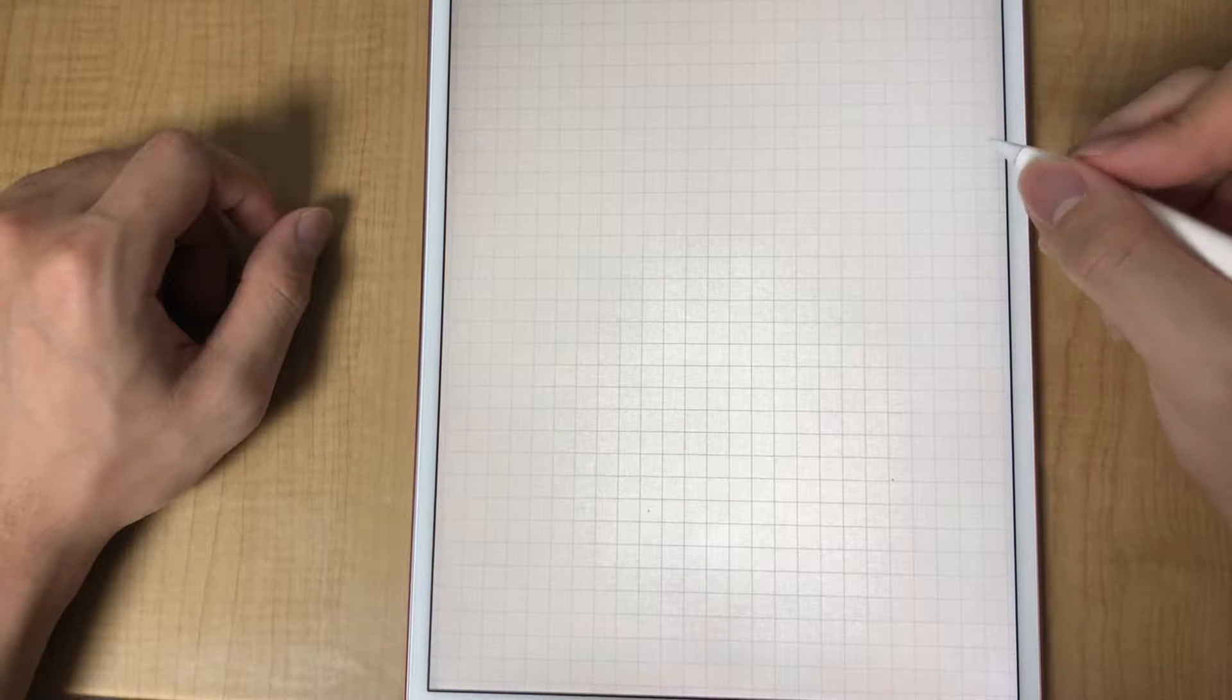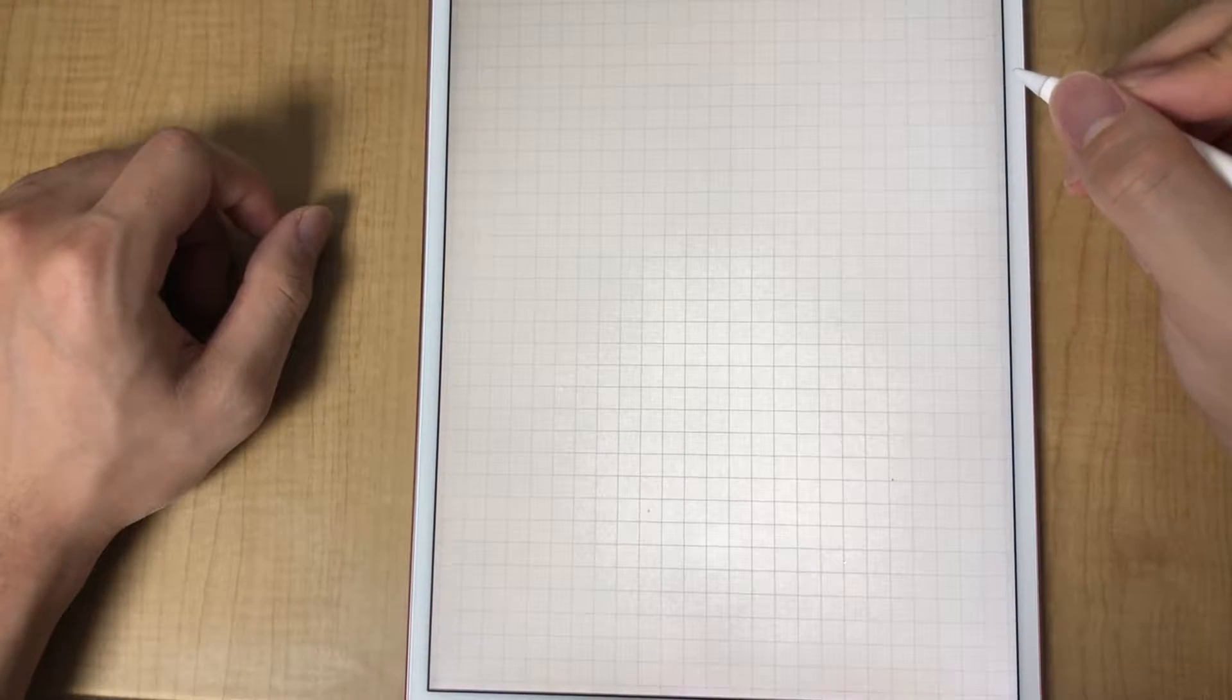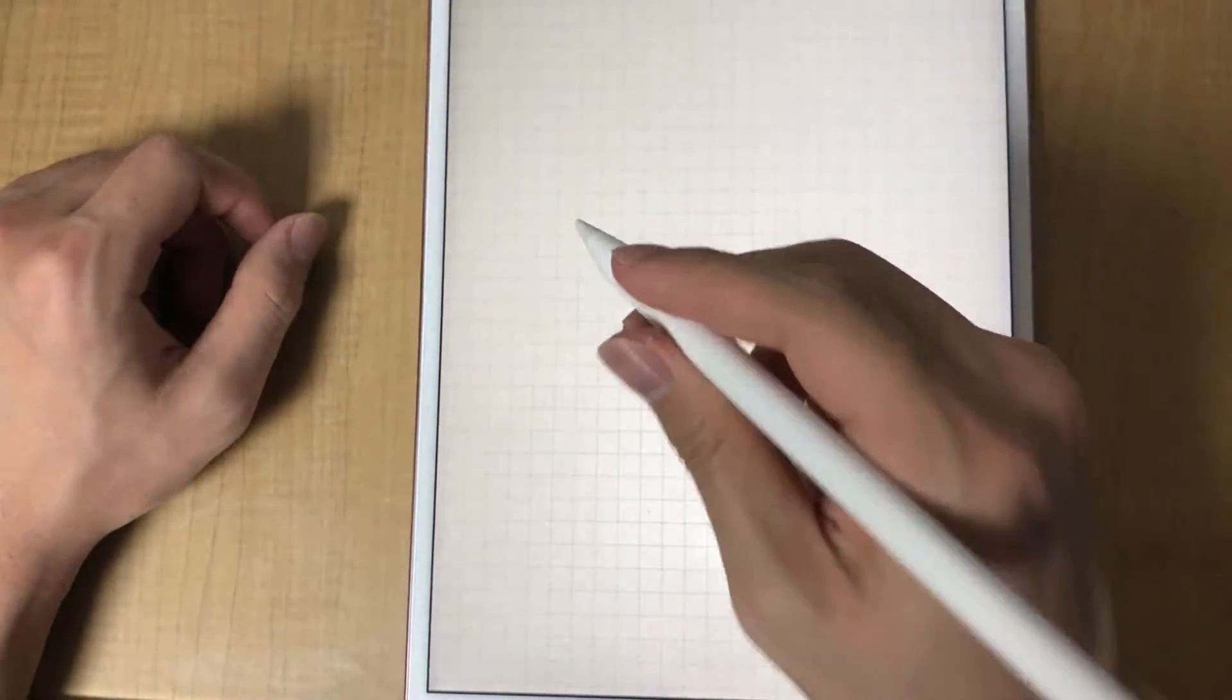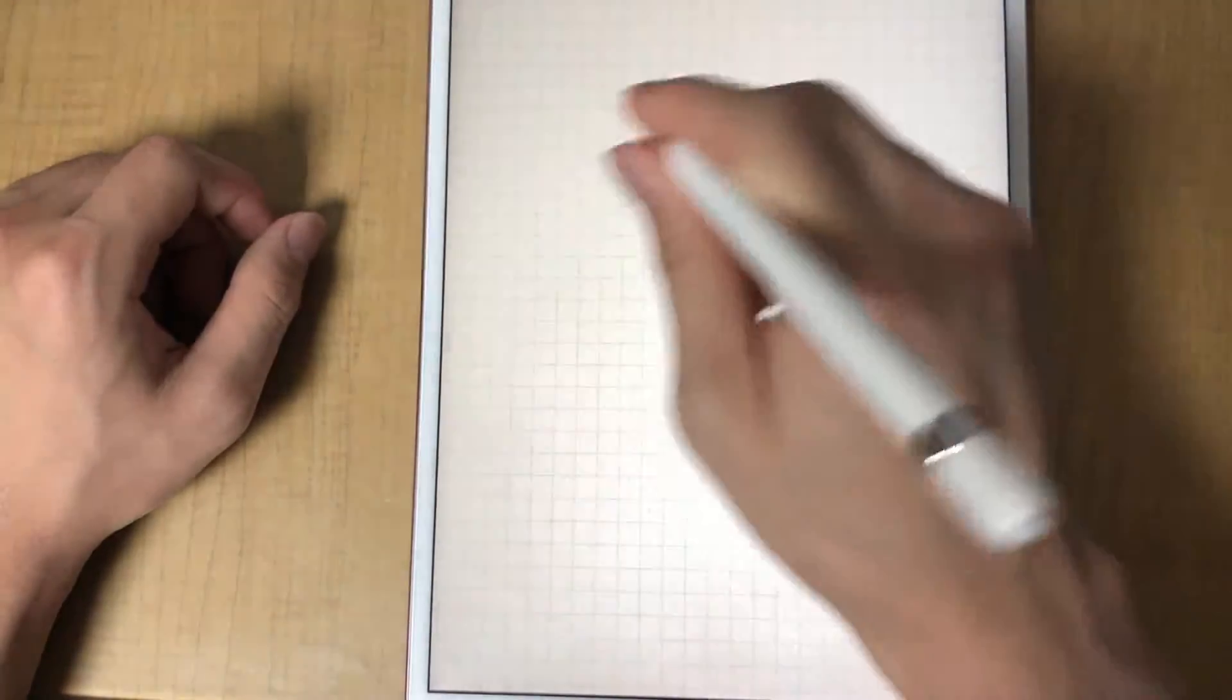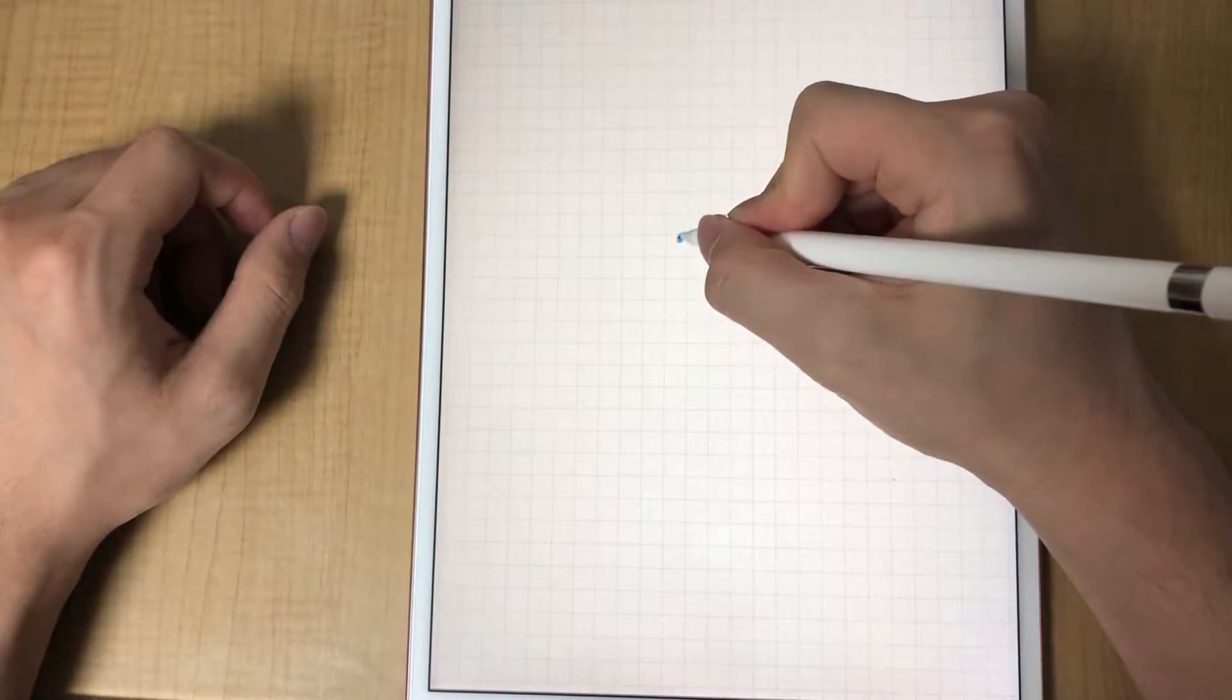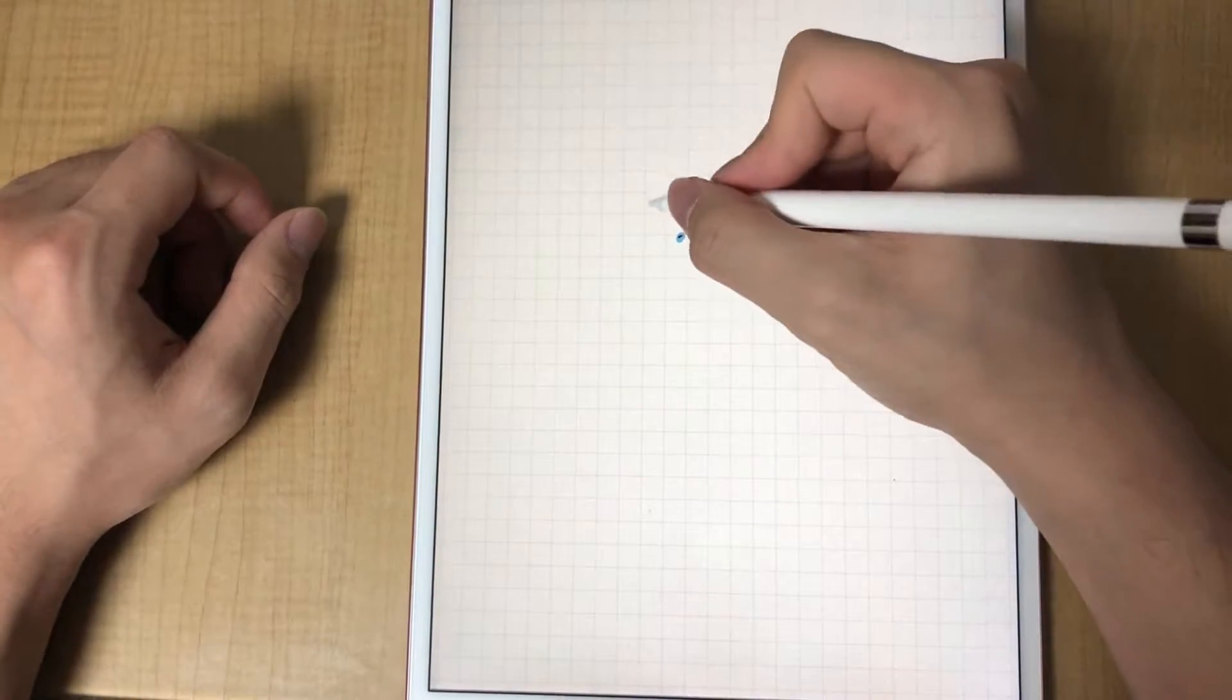To simplify the question, we will start by considering the point that the needle first makes contact with the plane. For example, if this was the needle and I dropped it on this plane, this dot. We'll be considering this dot. We'll call this P.